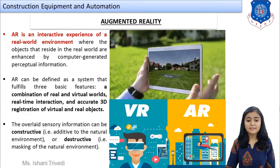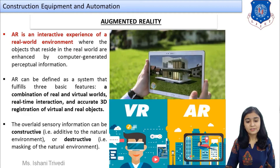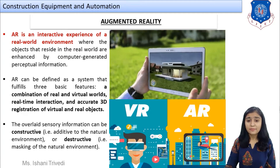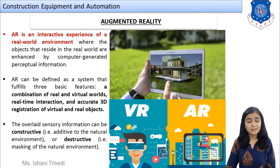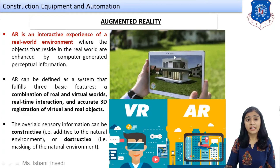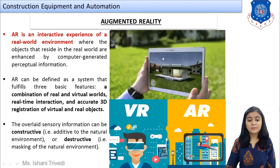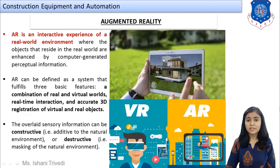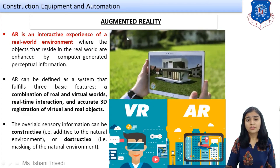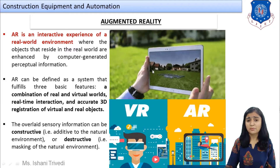The overlaid sensory information can be either constructive or destructive. Constructive AR means you are adding features to the natural environment, adding to existing objects. Destructive AR means if you remove a particular object or area from the environment, that would be the destructive type.